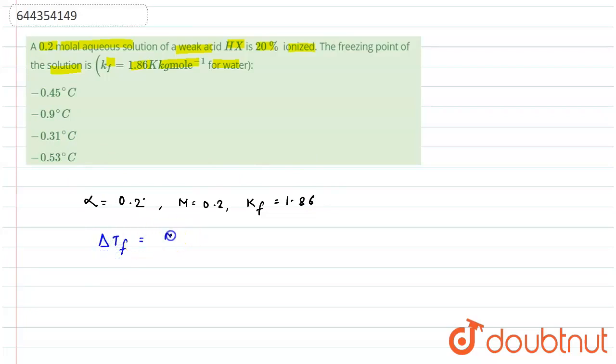So put the value, that means substitute it. It will give 0.2 times 1.86 times (1 plus 0.2), that is 1.2.